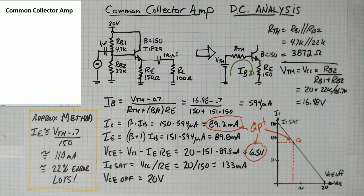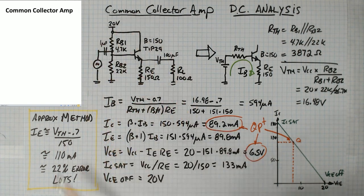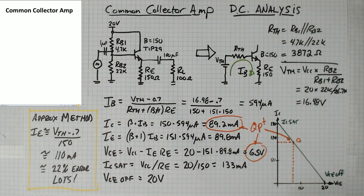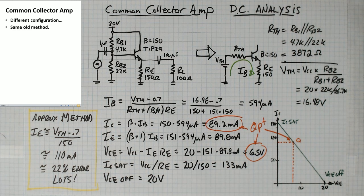The common collector amplifier, I kind of already showed you a quick schematic of that one. It looks like this here. And although it's a different configuration, we solve it using the same old method. So although it's different, we don't really need to memorize any new formulas. We just need to apply the same method to the circuits that we did with common emitter. So the first thing that you do is you redraw the base drive circuit by thevenizing it into an equivalent voltage and resistance.